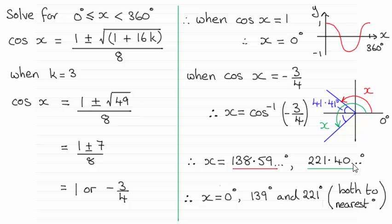Now if we just round these two answers, we then get 139 degrees and 221 degrees when they're given both to the nearest degree. So I hope that's given you some idea, if there were any problems, how to do that.